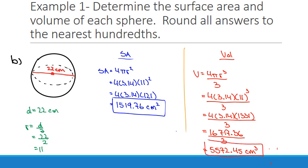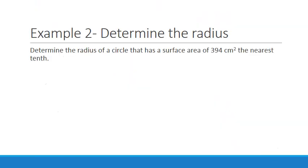Okay, so these are pretty basic calculations. Let's look at a problem next. So in this problem, we're going to determine the radius. So we're going to know everything else except the radius. Determine the radius of a circle that has a surface area of 394 centimeters squared to the nearest tenth. All right, so we're dealing with surface area. So let's begin by writing out our surface area formula. We know surface area is equal to 4 times π times r².